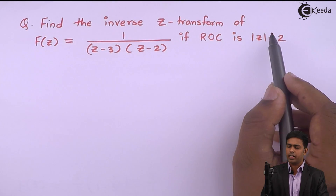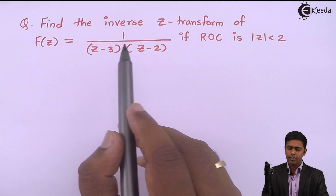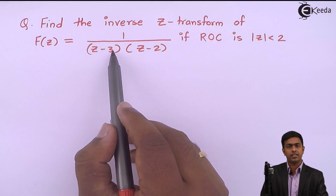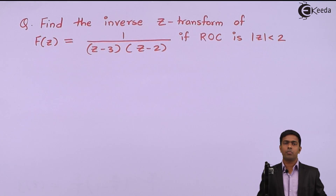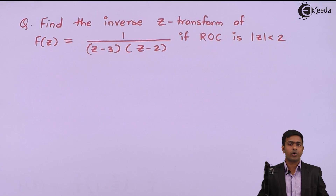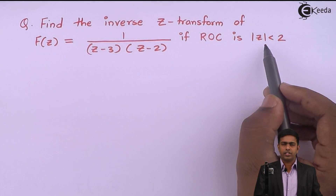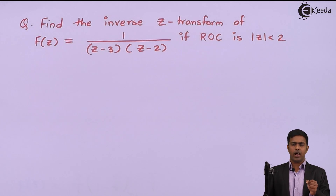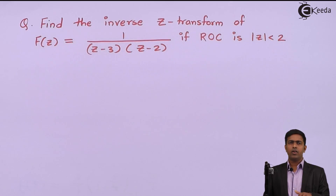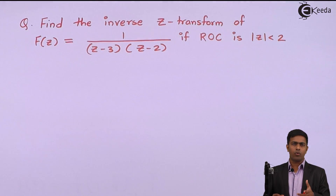Similarly, if z becomes greater than 2, say 3, then 3 minus 3 is 0 again giving infinity, and the Z-transform is not convergent. So, the condition |z| < 2 gives the set of points where the Z-transform converges.